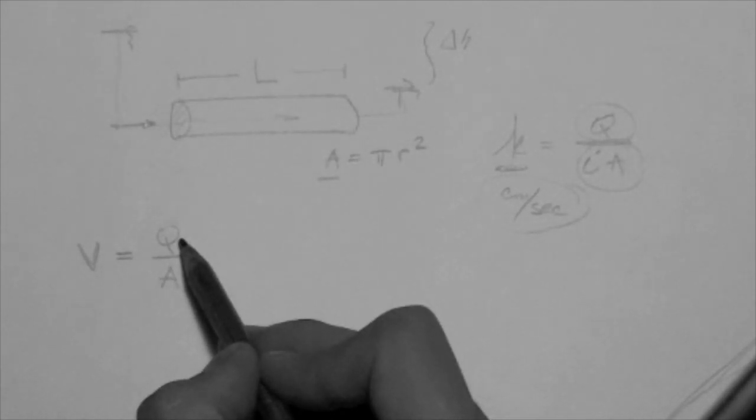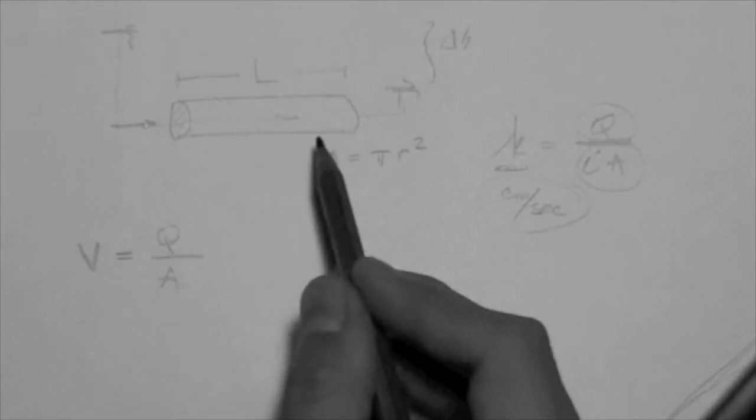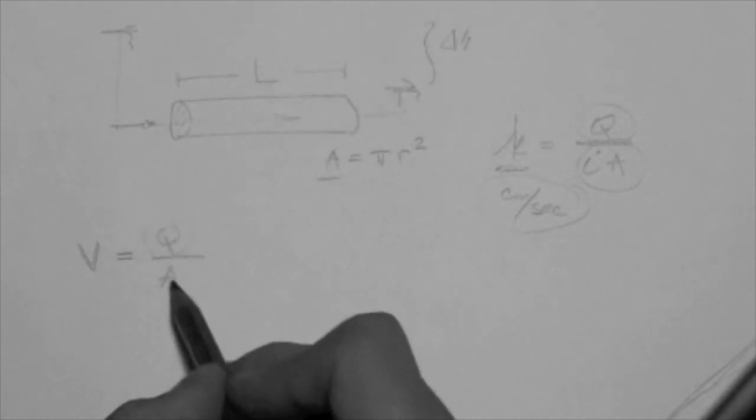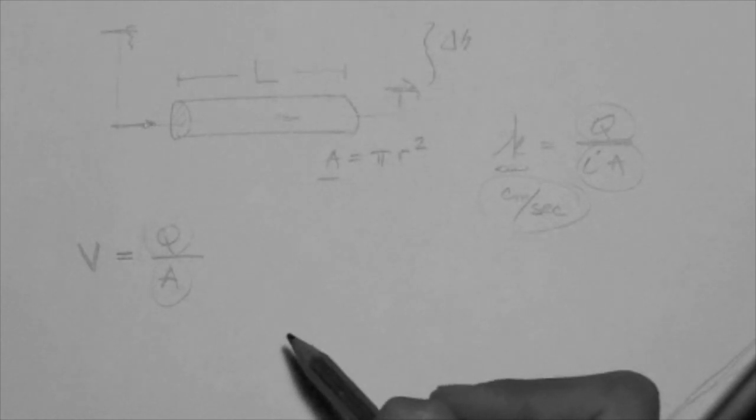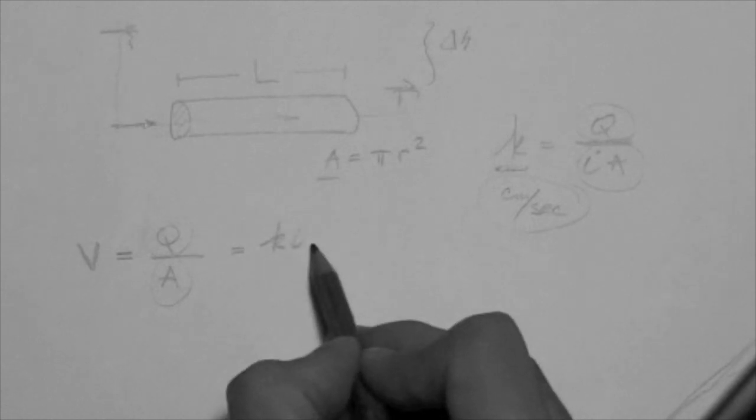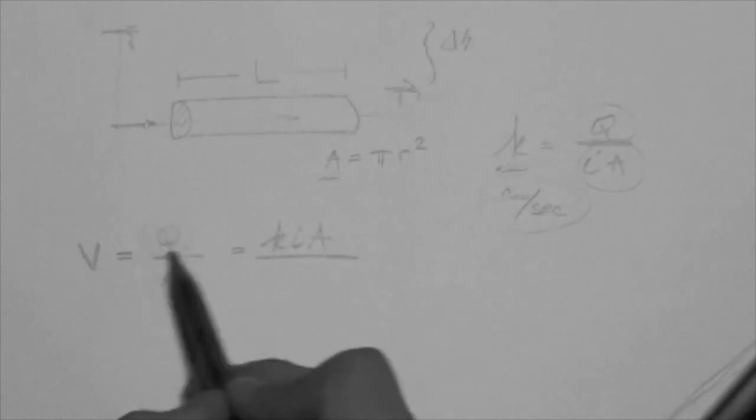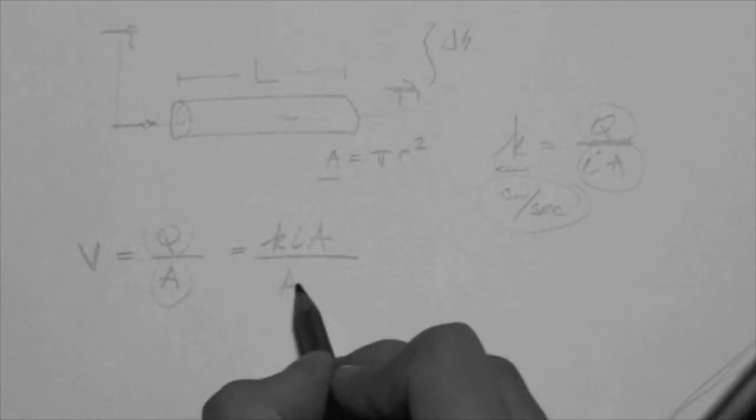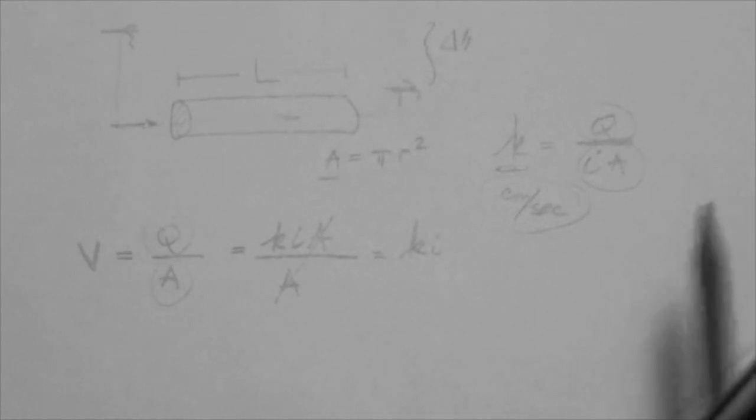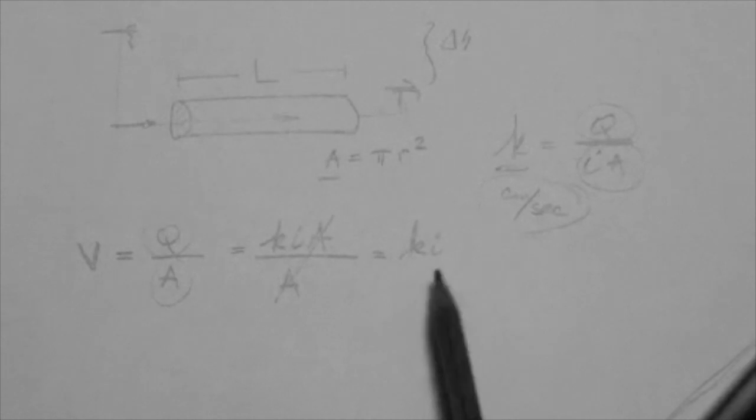Q is the flow rate that is measured, and A is the area of flow. K times IA, that's Q, over A. The A's cancel. K times I. So now we have the actual velocity. It's K times I.